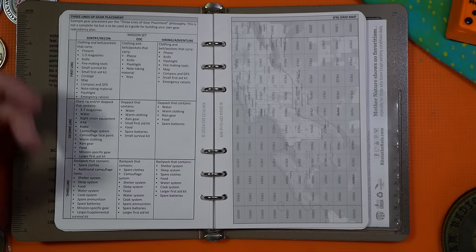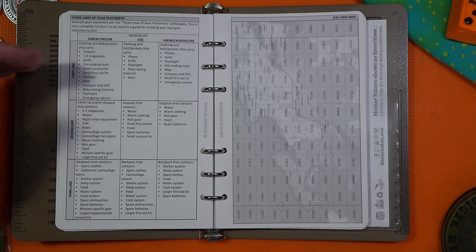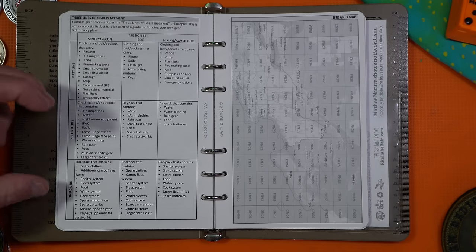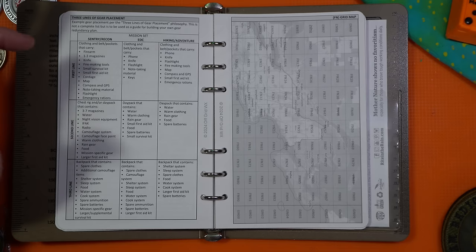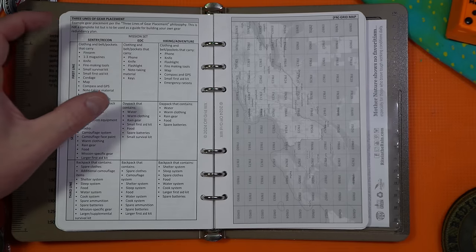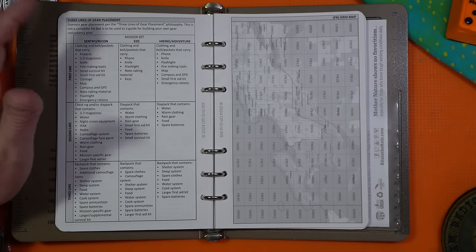Now this page might not be for everybody, but this is a gear planning list. So a first line, second line, and third line. So it basically goes up through what you carry on your person, some kind of second line thing. So like a chest rig or a day pack, and then a full-on backpack.